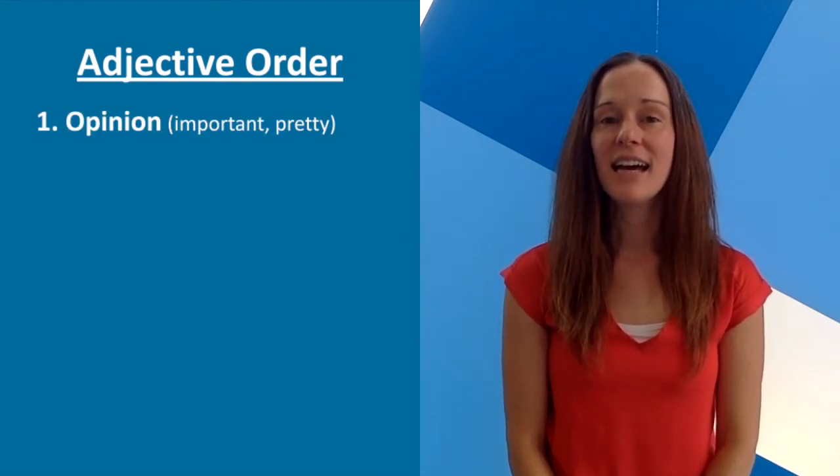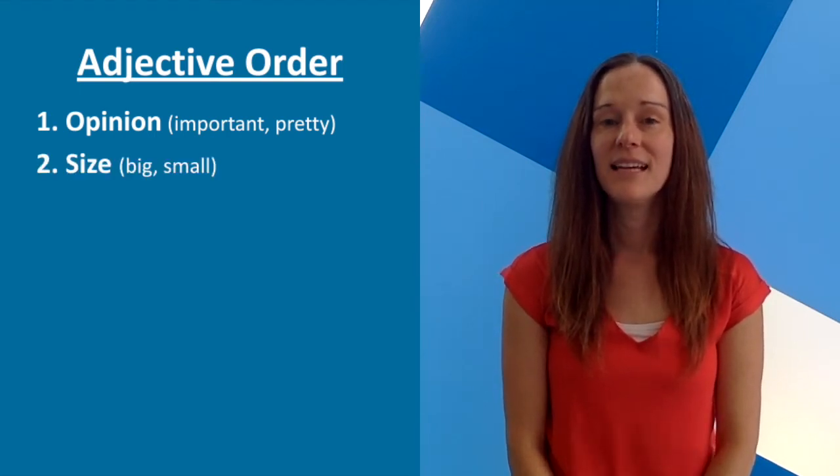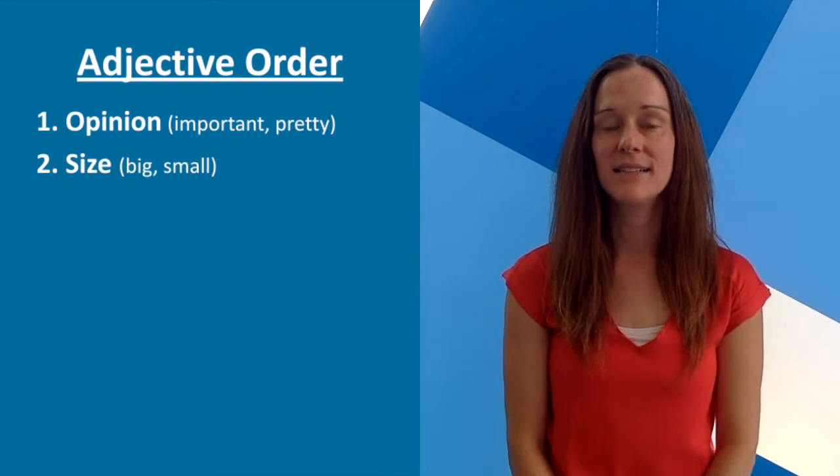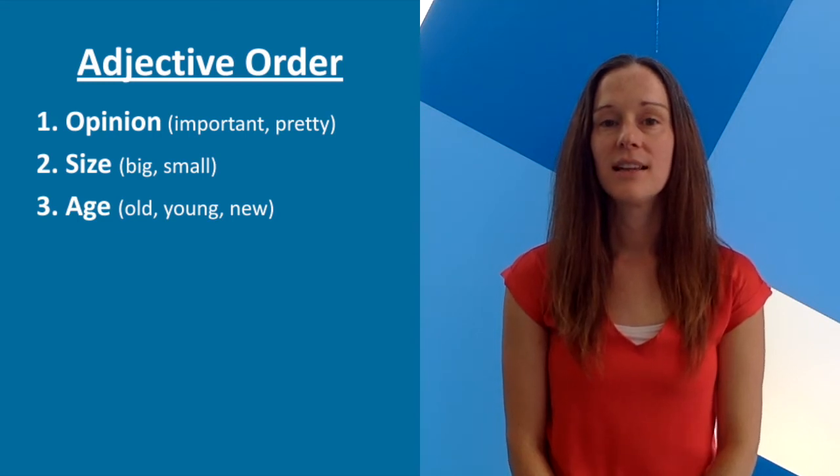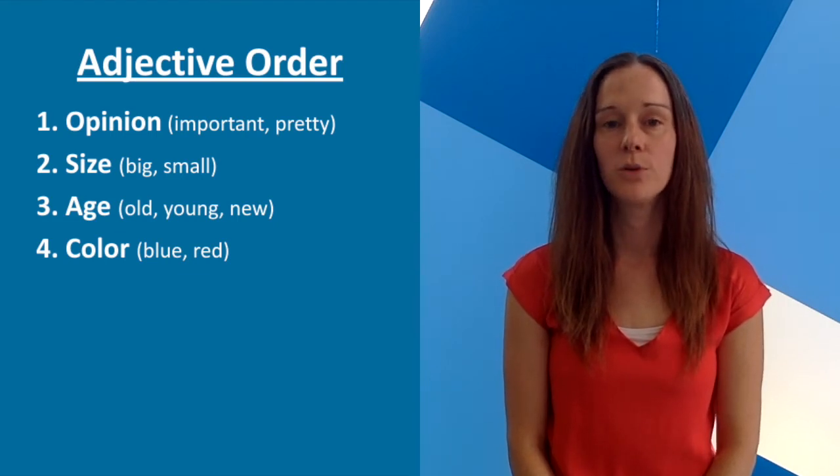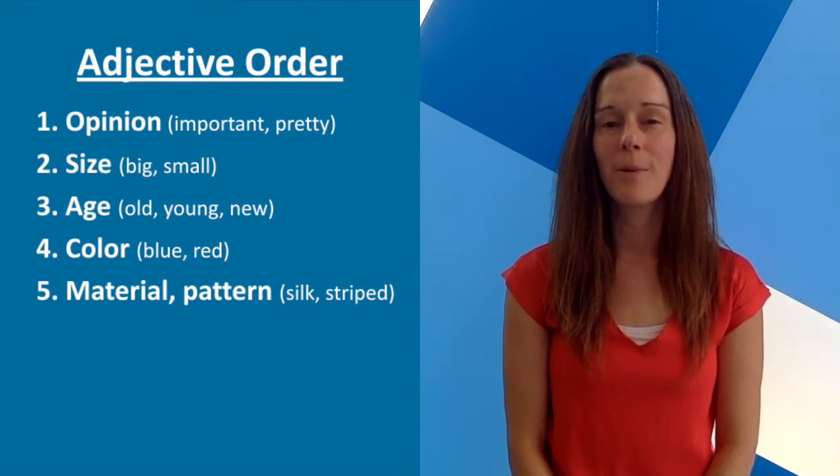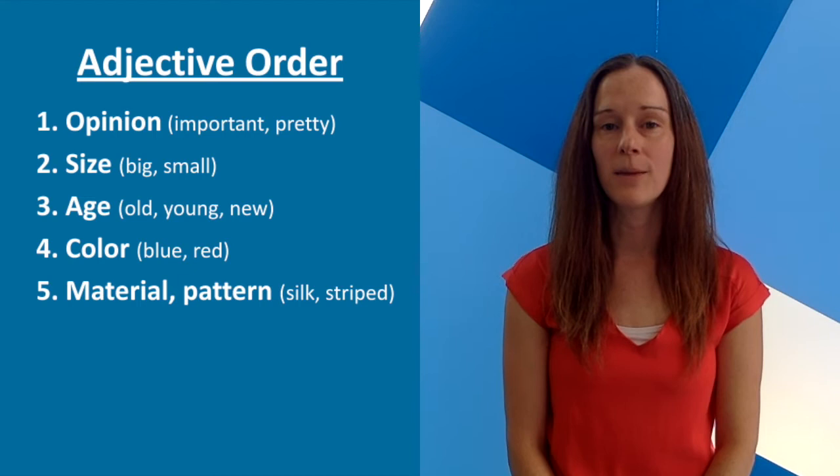First, any adjectives that describe an opinion, like important or pretty. Second, size, like big or small. Third, age, like old, young, or new. Fourth, color, like blue or red. And fifth, any adjectives that describe a material or a pattern, like silk or striped.